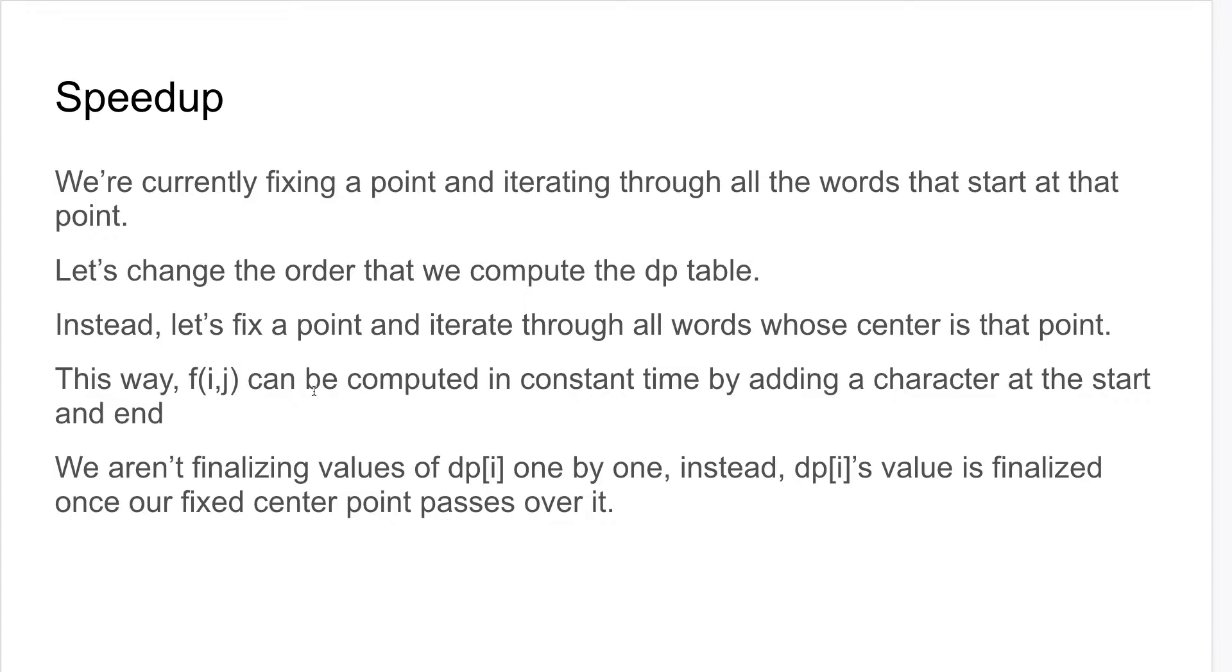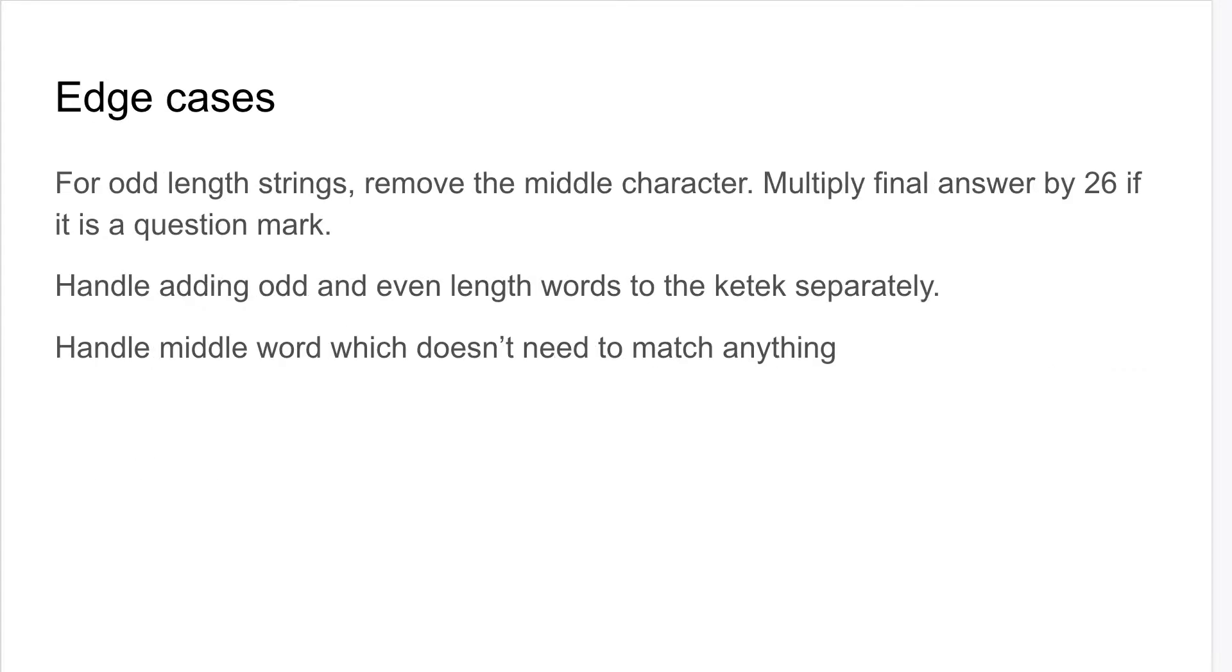This way, f(i,j) can be computed in constant time because we're just expanding one character to the start and end of the word that we're adding. We don't need to re-compute everything in between, so this speeds it up. We aren't finalizing the DP values one by one as we're going right to left. Instead, we're fixing the center point, and once the center point passes a certain point, those DP values on the right side are all finalized.